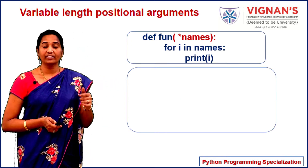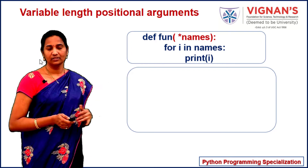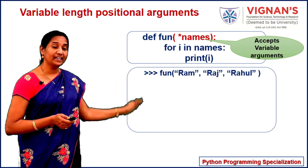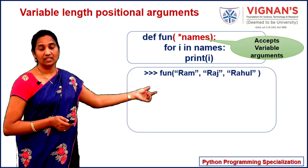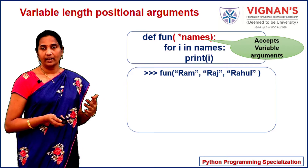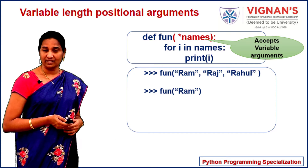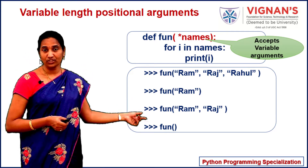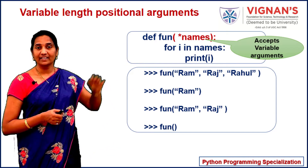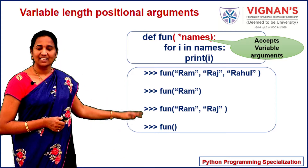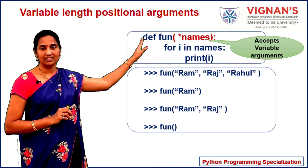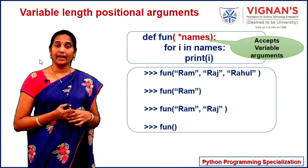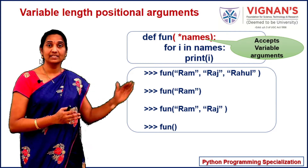Now let's see how we can call functions with variable length parameters. The parameter names can accept a variable number of arguments. In this function call, I am passing three different string arguments. Then I call the same function fun by passing a single argument, and again with two arguments. I can even call this function without passing any argument — in that case, the names parameter receives an empty tuple. In all cases, the parameter names is treated as a tuple, because it is prepended with a single asterisk symbol indicating variable length positional arguments.